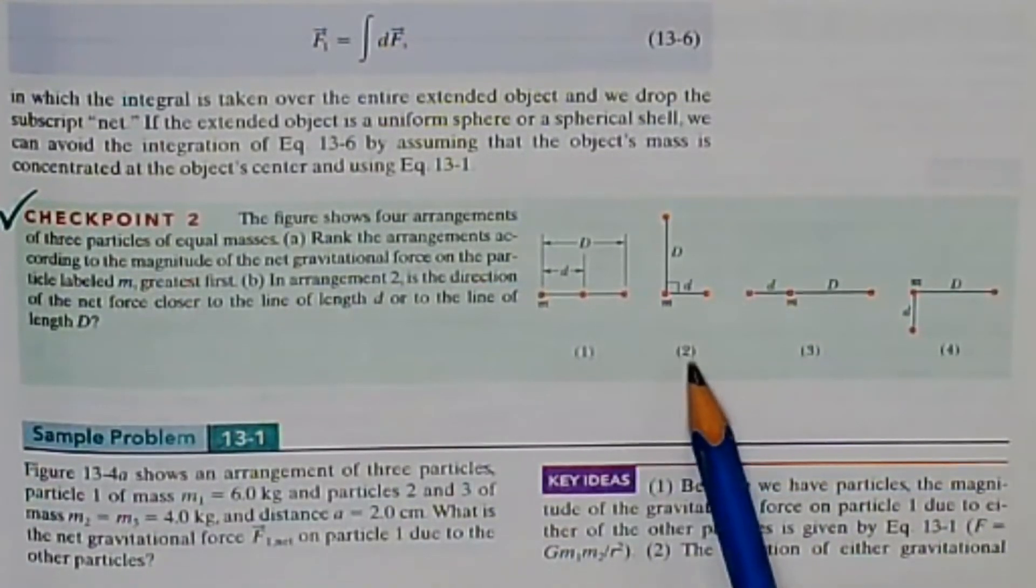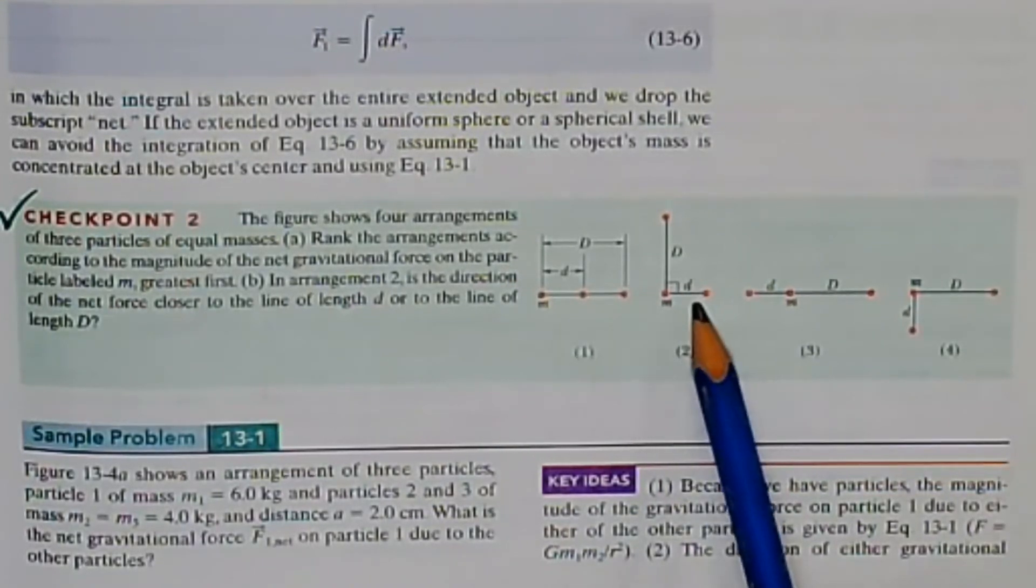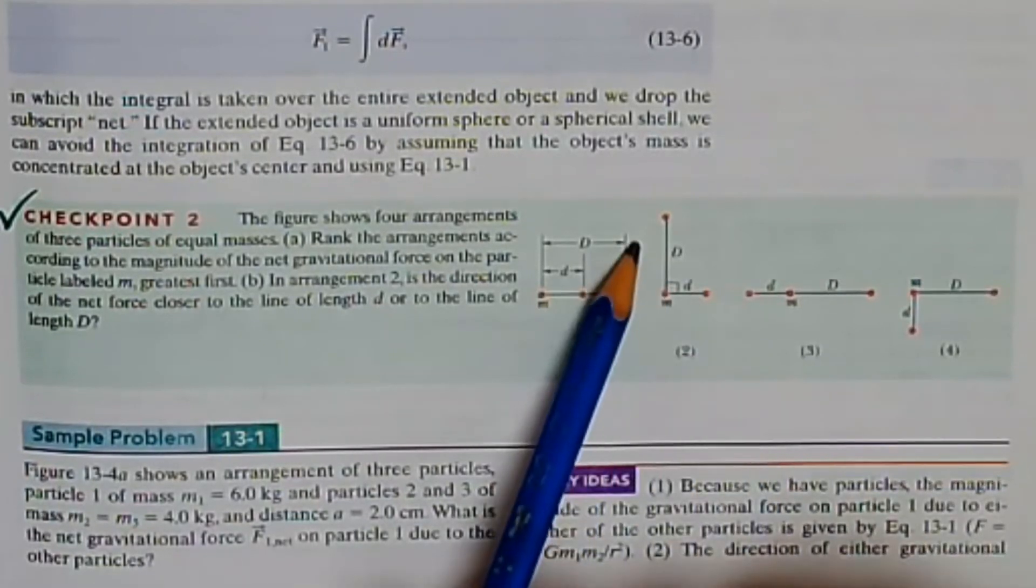And in arrangement 2, is the direction of the net force closer to the line of length little d, or closer to the line of big D?